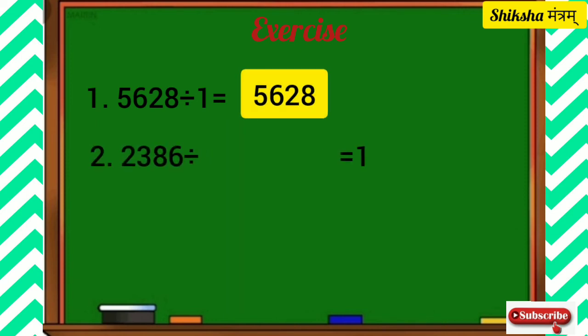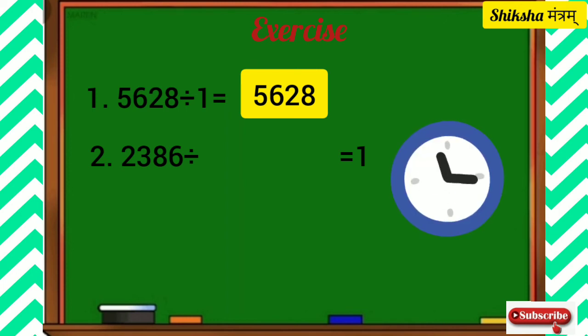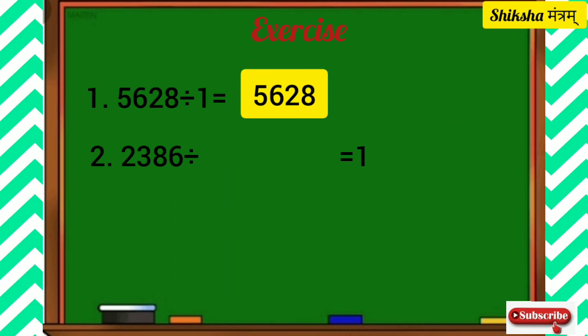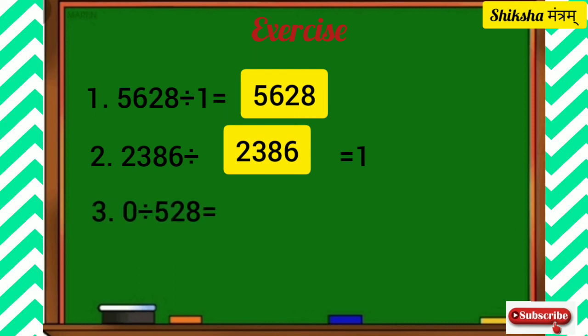Question number 2: 2,386 divided by what number gives the quotient 1? The correct answer is 2,386, because when any number is divided by itself except 0, the quotient is 1.